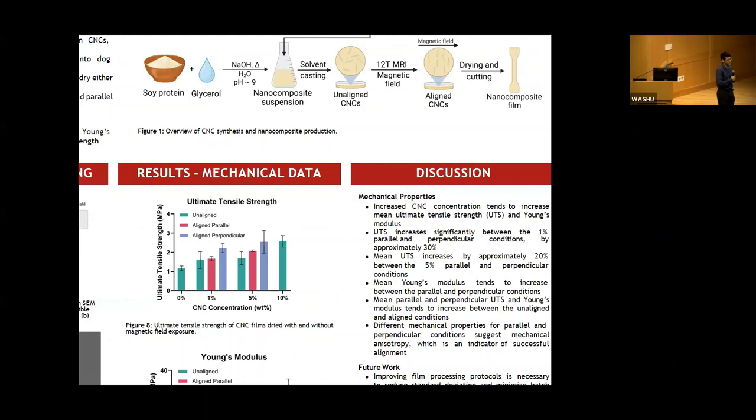Regarding the MRI alignment: the films themselves don't have magnetic properties, but the cellulose nanocrystals have diamagnetic anisotropy due to the individual bond dipoles and rod-like shape, which causes them to align perpendicular to the magnetic field. Cellulose nanocrystals need strong magnetic fields to align. A 12-Tesla MRI provides maximum alignment compared to something like a 3-Tesla, which could achieve alignment but may not lead to as significant differences.